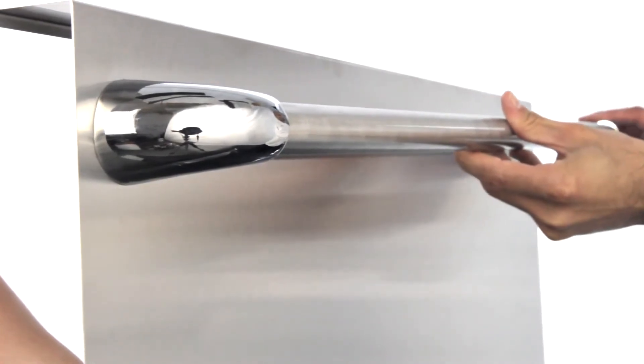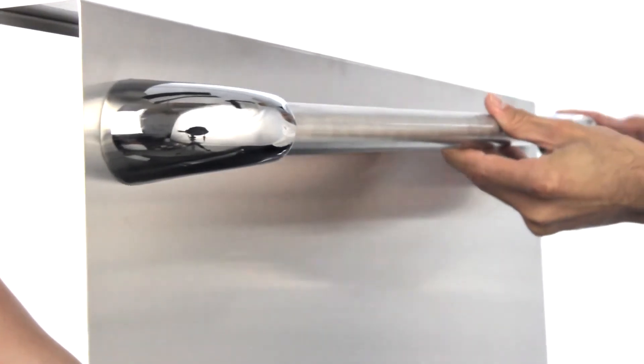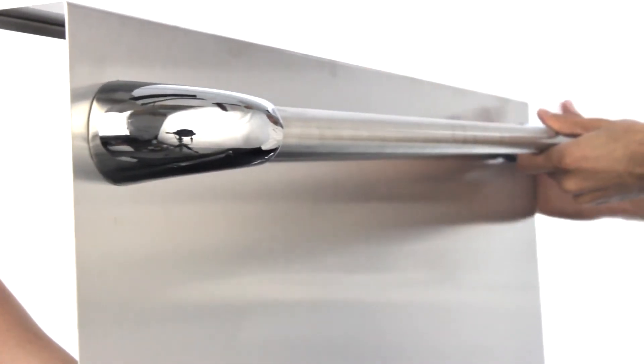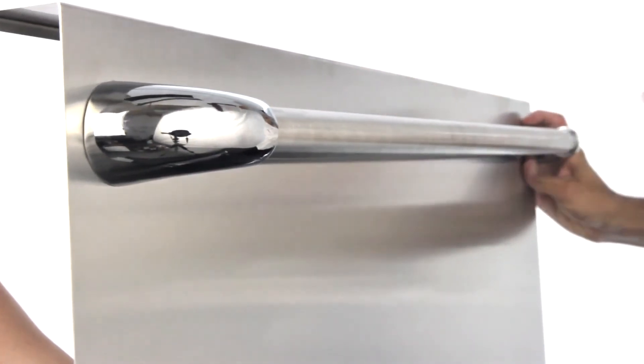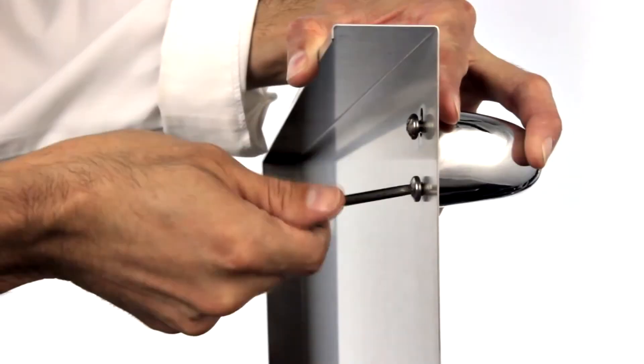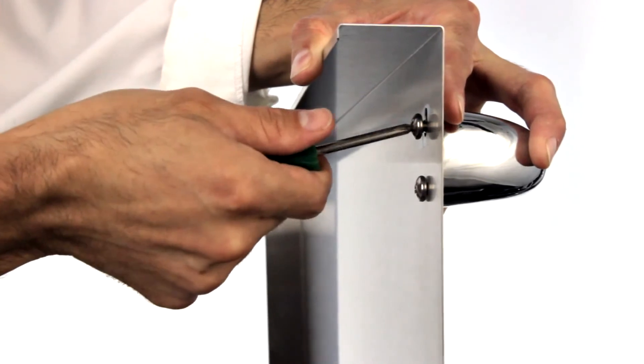Now set the handle in the cup of its bottom bracket, and place the top bracket on the handle so you can line it up with its two mounting holes. Again, hand tighten the two screws that hold the top handle bracket. And finally, completely tighten all four of the handle bracket screws.